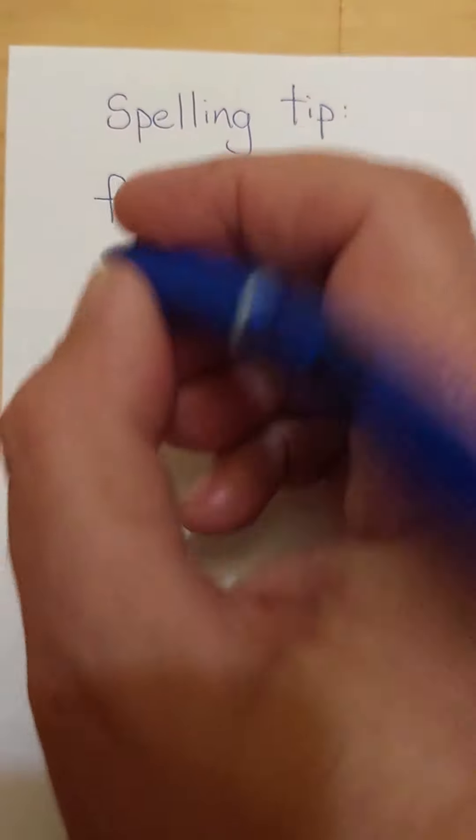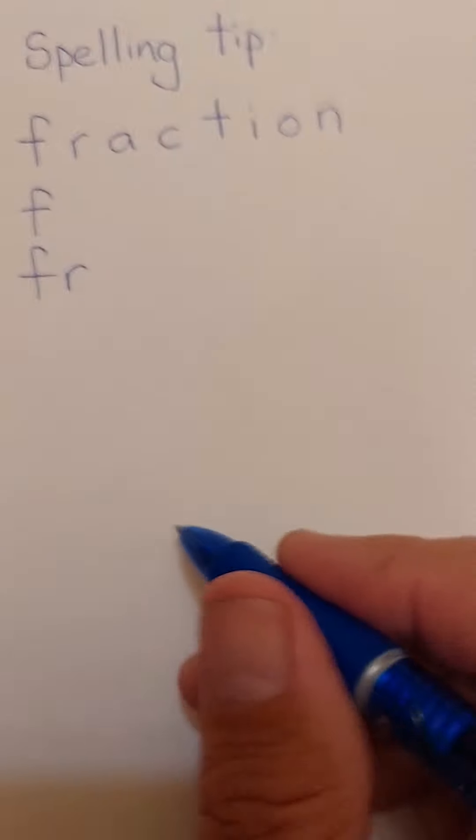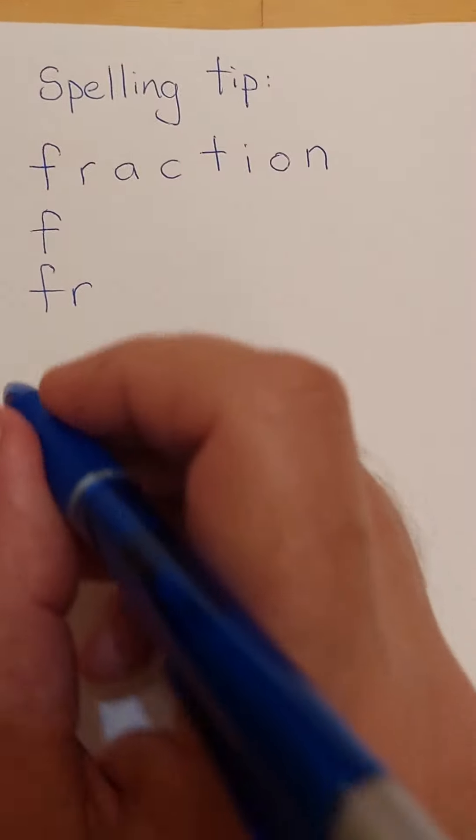Here's the trick though. Underneath it just write one letter at a time, then the first and the second letter, just taking it one step at a time like this.